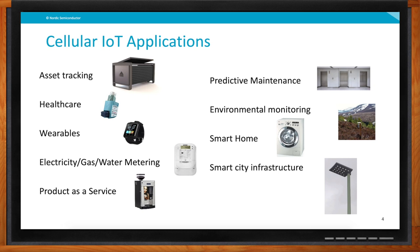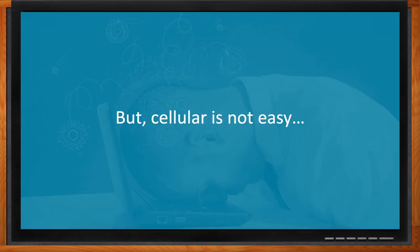Another good example is metering, because metering uses wireless technology extensively today, but it's very hard for big utility manufacturers to make a single product that can ship worldwide because connectivity is very fragmented. Now they can build one product and ship it around the world because cellular works across the globe. But cellular is still a fairly new technology and cellular is not really easy today - and that's the challenge we want to talk about.